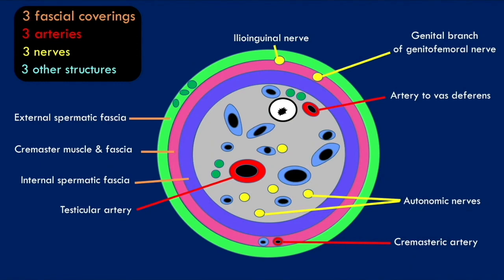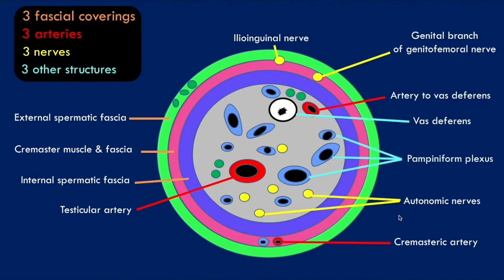The three other structures within the spermatic cord are: the vas deferens, which carries sperm from the testes to the urethra; the pampiniform plexus, a network of small veins that runs within the spermatic cord providing venous drainage to the structures within the scrotum; and these veins eventually drain into the testicular veins.